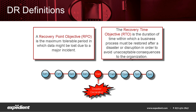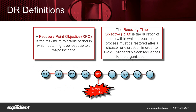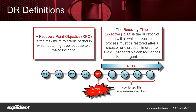Looking backward from the disaster declaration, the amount of data that is lost — defined as the time between the last data replication and the time of the DR event — is considered to be the RPO. Going forward from the disaster declaration, the amount of time it takes for systems, data, and applications to be presented to end users or customers is the RTO.